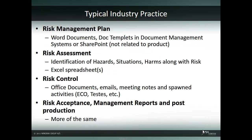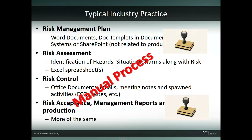Typical industry practices around risk management include the use of Microsoft Office documents. For risk management plans, Word documents and document templates are used to identify processes and sign-offs, and are then published to a document management system or corporate intranets like SharePoint. For risk assessment and control, Excel spreadsheets are used to identify hazards, their situations and harms, and what has been done to mitigate them. Many of these processes are manual, with business objects lacking relationship to the Excel spreadsheet document, making the systematic reduction of risk difficult or error-prone.